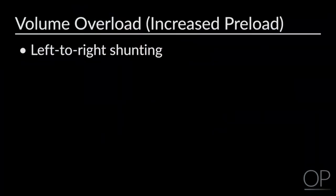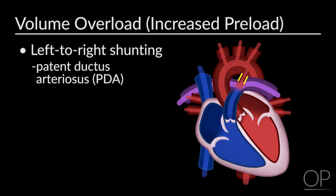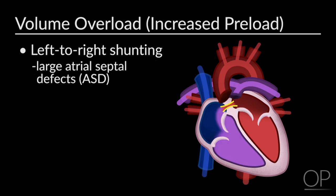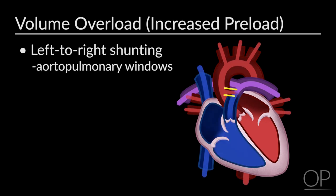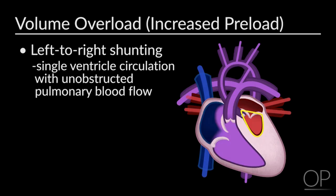The second cause of heart failure in infants and children is volume overload, i.e., increased preload. This occurs primarily in two situations of congenital heart disease. First, left-to-right shunting. Anatomical defects that result in left-to-right shunting include large ventricular septal defects, patent ductus arteriosus, large atrial septal defects, aortopulmonary windows, atrioventricular septal defects, and single ventricle circulation with unobstructed pulmonary blood flow—all resulting in increased volume load to the ventricle.